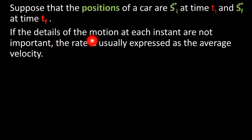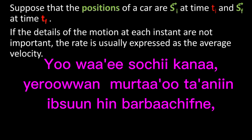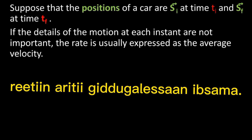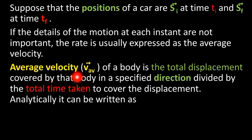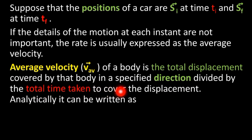If the details of the motion at each instant are not important, the rate is usually expressed as the average velocity. The average velocity of a body is the total displacement covered by that body in a specific direction divided by the total time taken to cover the displacement.